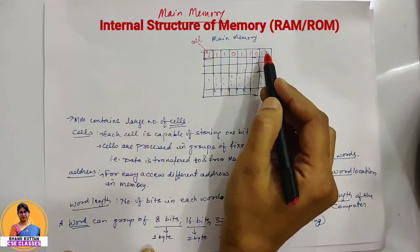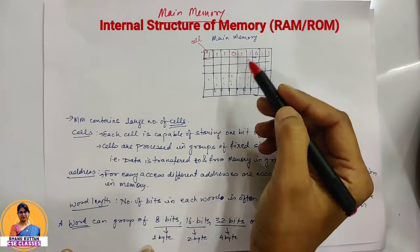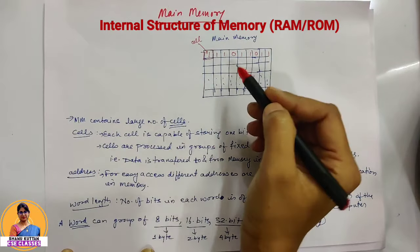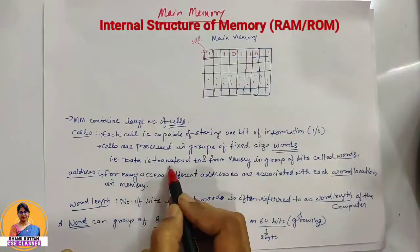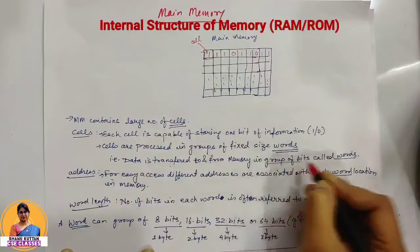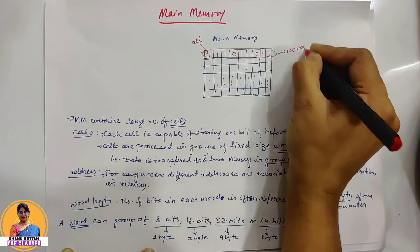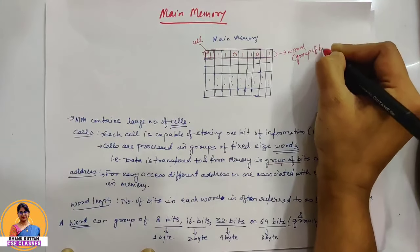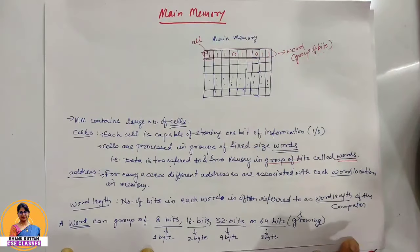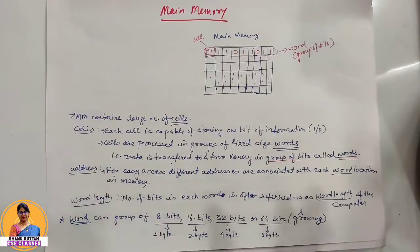Cells are processed in groups of fixed size called words. Data transfer to and from memory is in the form of words — one word is transferred to and from memory in groups of bits called words. What is a word? Words are simply groups of bits. It can be 8 bits, or 16 bits, or 32 bits — it depends. Basically, a word is a group of bits.